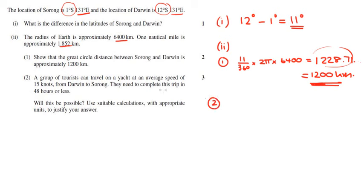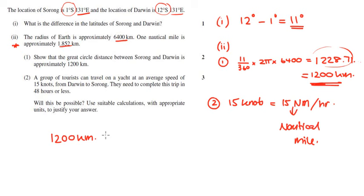Part two, it says a group of tourists can travel on a yacht at an average speed of 15 knots. 15 knots means 15 nautical miles per hour. From Darwin to Sorong, they need to complete the trip in 48 hours or less. Will this be possible? Using suitable calculations with appropriate units to justify your answer. We know that we're 1,200 kilometers away from each other. But because I'm using 15 knots, which is in nautical miles, and nautical miles is different to kilometers, I need to convert. That ties in this extra part there.